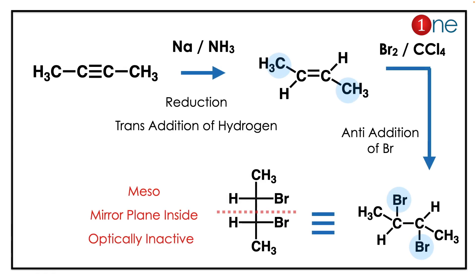The answer is interesting and involves many facts. The reactant is 2-butyne, which has a triple bond. Reacting with sodium and liquid ammonia involves a reduction — the trans addition of hydrogen — so the product of this step is a trans-alkene.